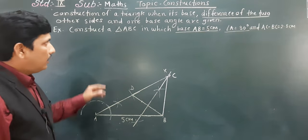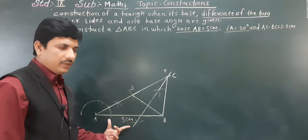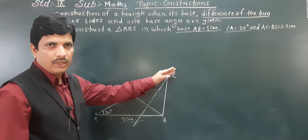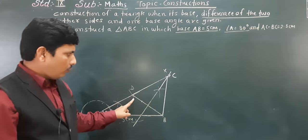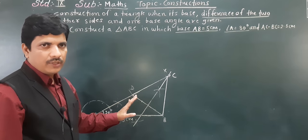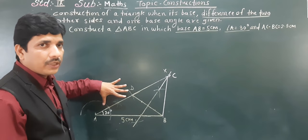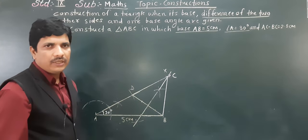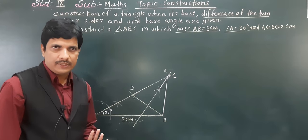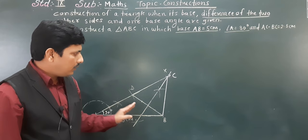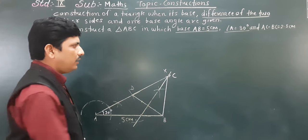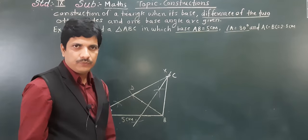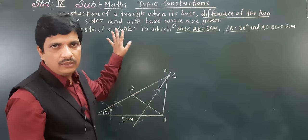So this is now our required triangle ABC constructed with the help of the given information. Let me recap: first we took AB equal to 5 centimeters, then we constructed angle A of 30 degrees and extended ray AX. We took 2.5 centimeters on AX, bisected DB, and the bisector met AX at point C. Then we joined CB — triangle ABC is complete.